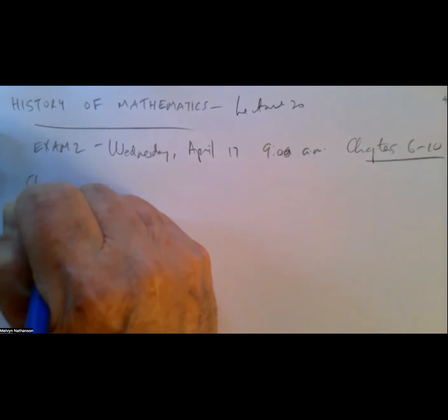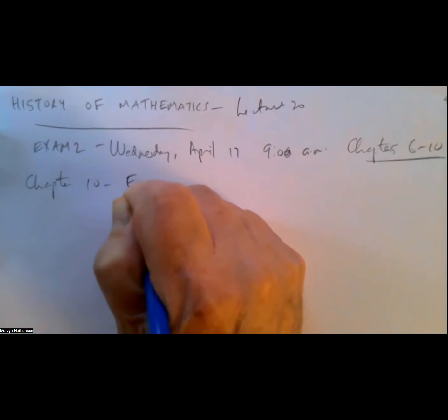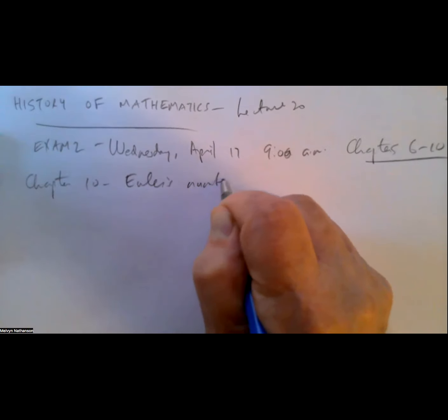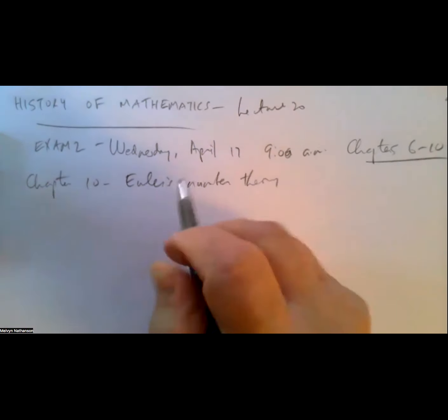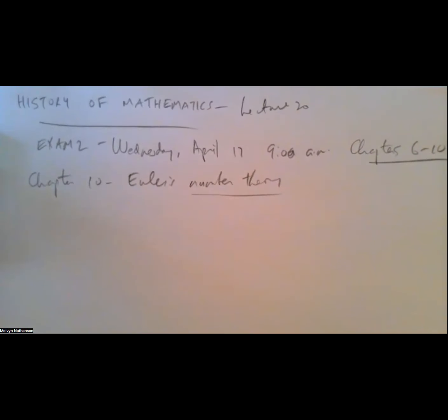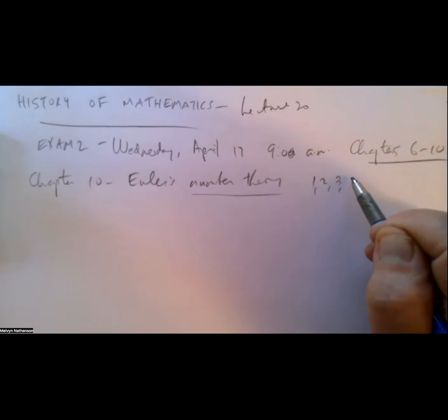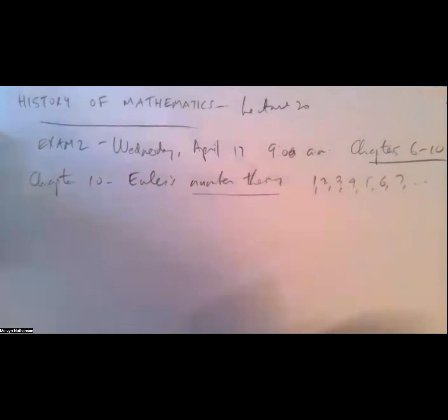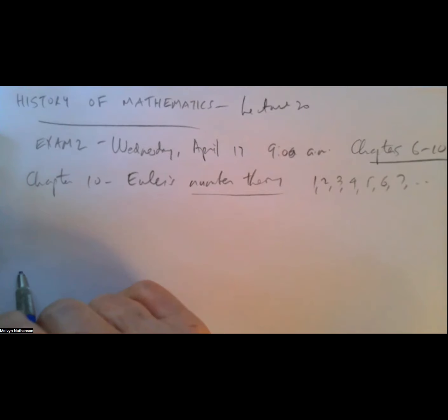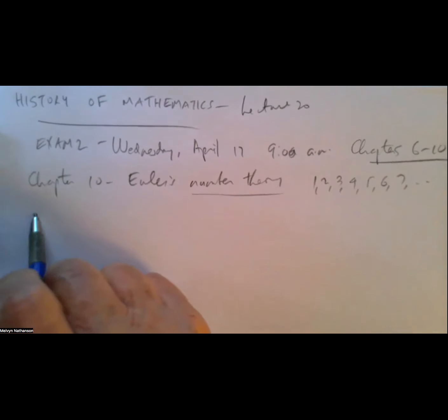History of Math, we're up to Lecture 20 out of 26 lectures, with two exams and 26 lectures for the 28 class meetings at CUNY. We are looking at Chapter 10, which is Euler's work in number theory. Number theory is the study of the integers, especially the positive integers, and a useful central idea in number theory is that of a prime number.